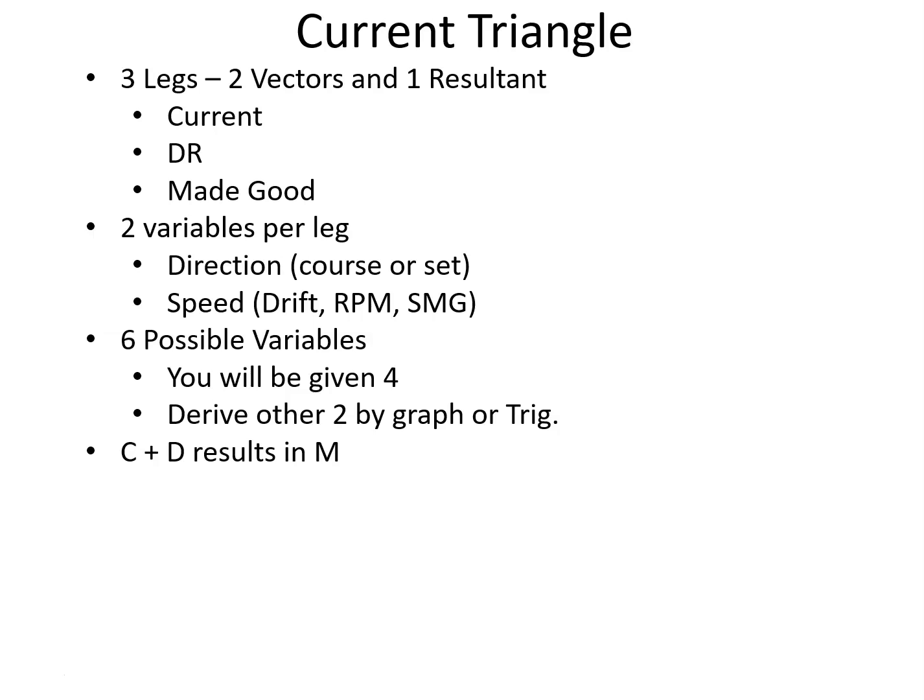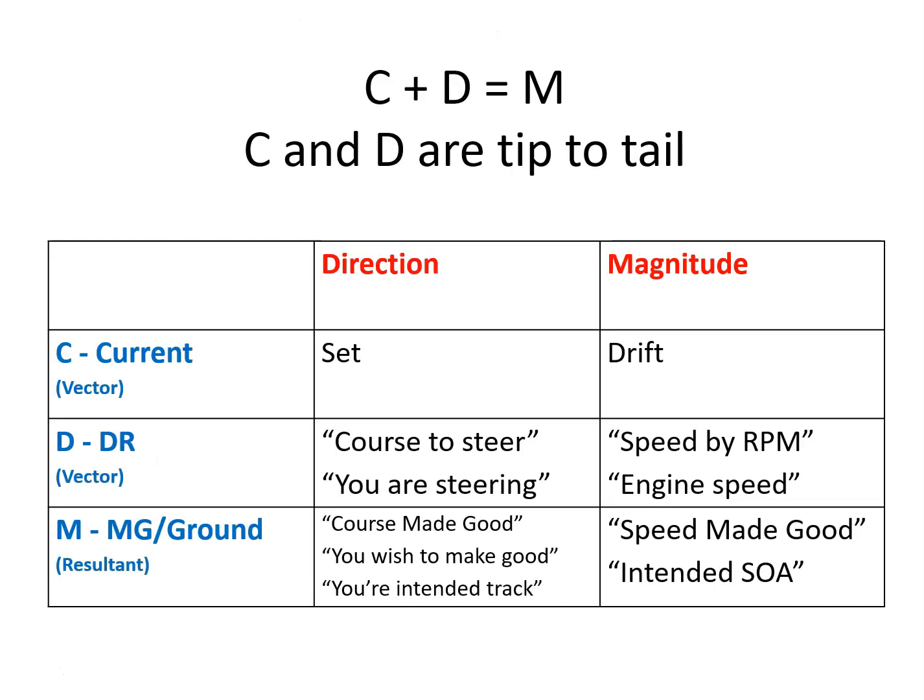Every current triangle has six variables, and you are going to have four of them in every current problem, and you're going to have to figure out the other two. So this is a table - you don't necessarily have to think about it this way, but this is how I think about current. I think about it in terms of three legs of a triangle. Each leg has two different components: a direction component and a magnitude component. For current, the direction is set, the magnitude is drift. For the DR, the direction is course to steer or you are steering.